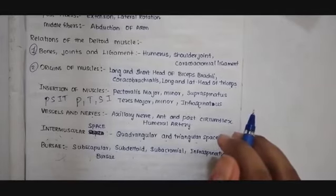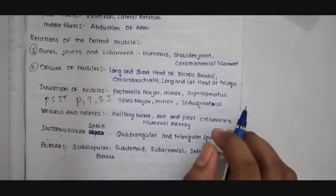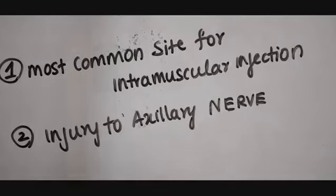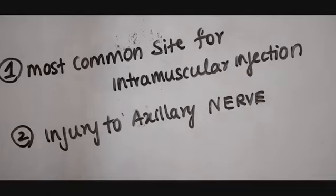Now let us discuss about the clinical application of the deltoid muscle in detail. First, doctors use the deltoid muscle for injections — it is the most common site for intramuscular injection. Second, this deltoid muscle is supplied by the axillary nerve. If there is any damage to the axillary nerve, then the deltoid muscle will be paralyzed.